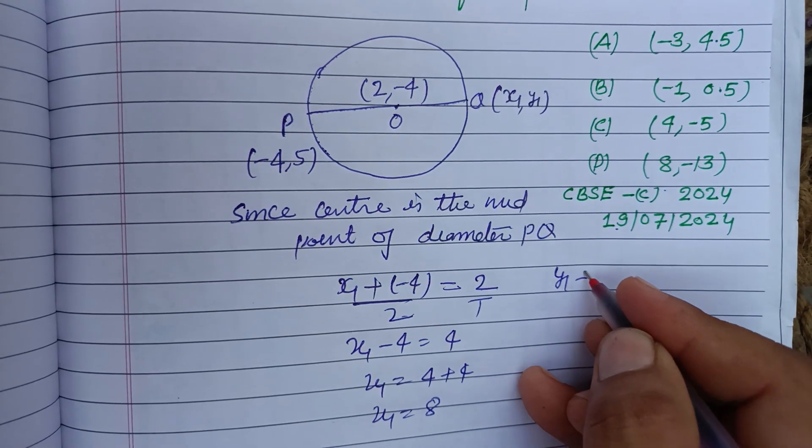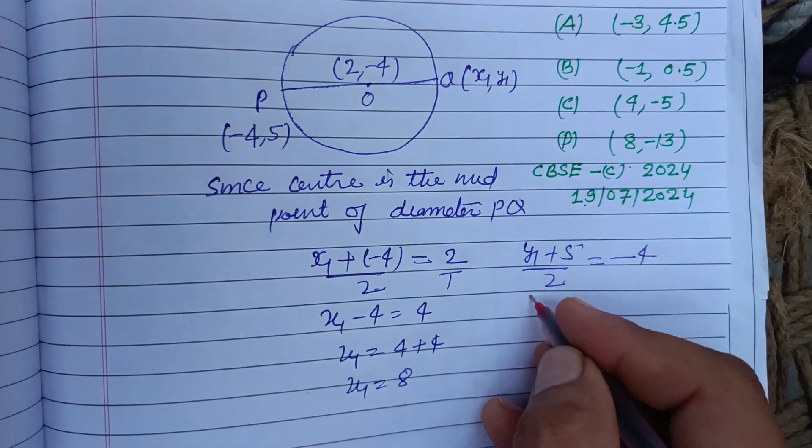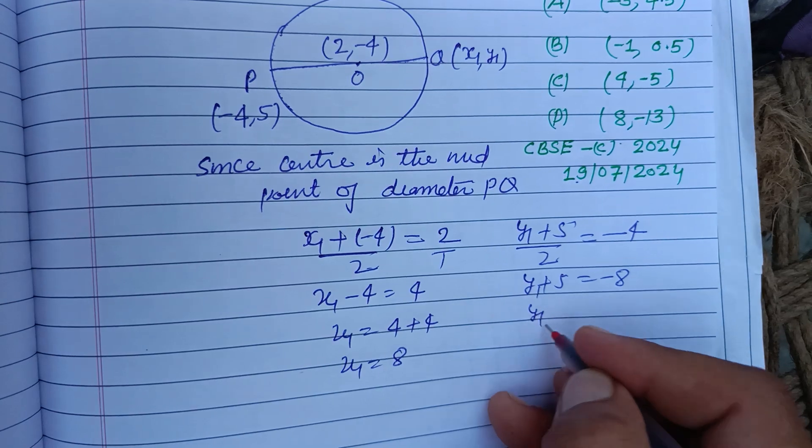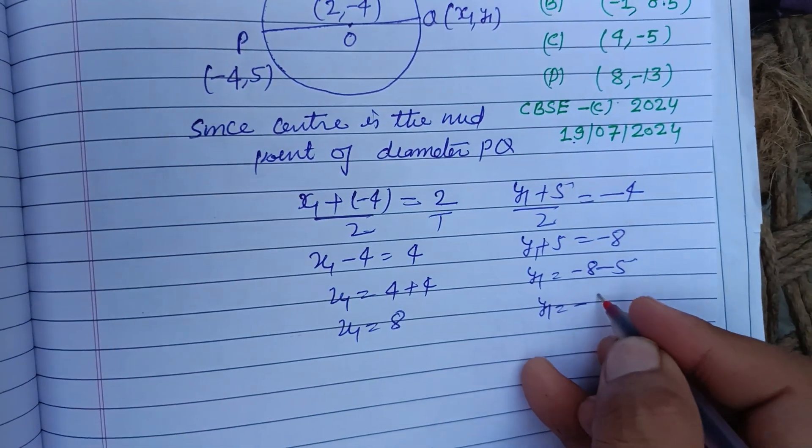Now (y1 + 5)/2 = -4. y1 + 5 = -8, y1 = -8 - 5, y1 = -13.